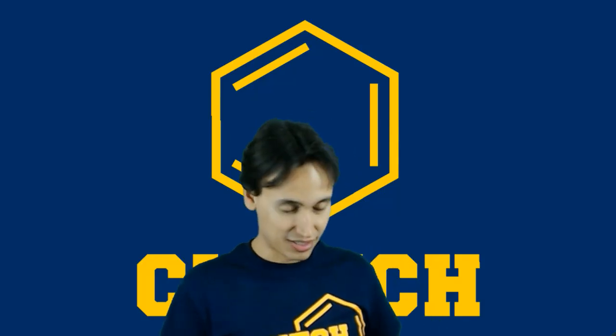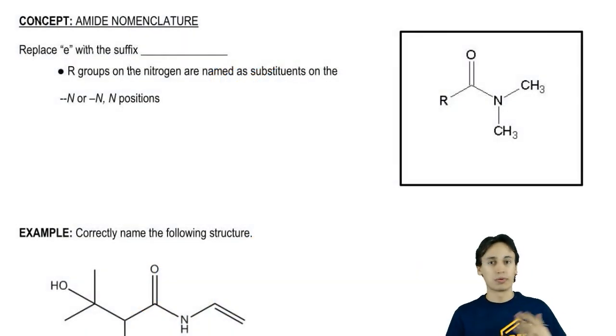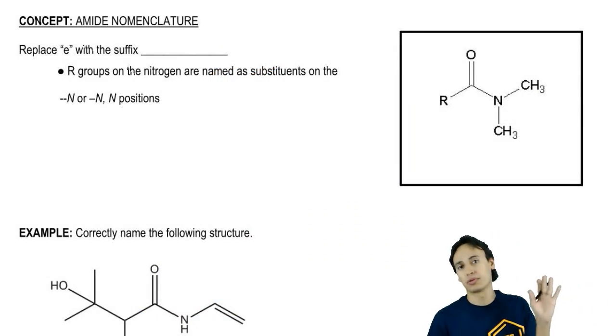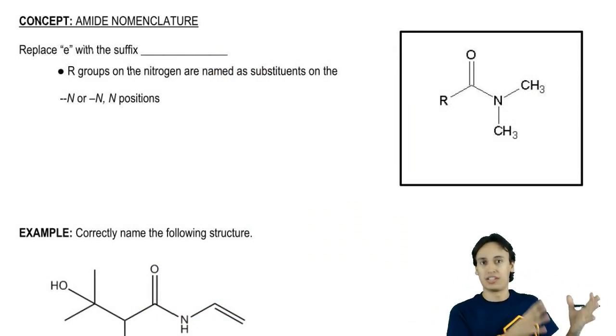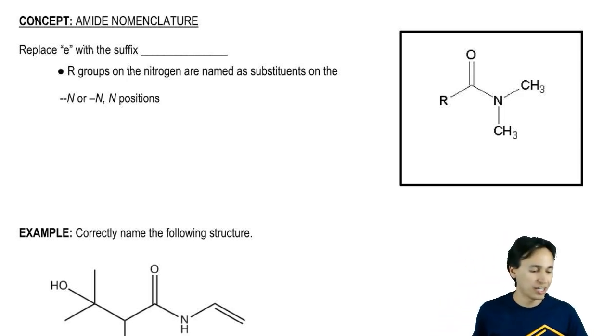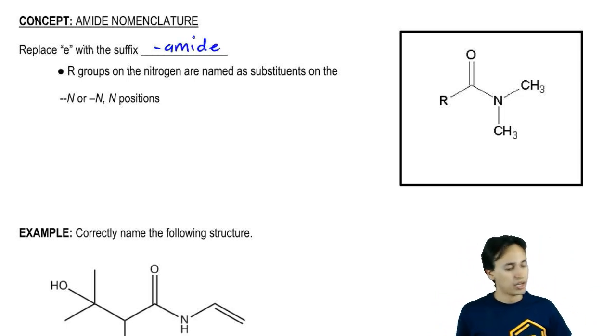Time to learn how to name amides. Amides are a carboxylic acid derivative, so pretty much everything that applies from a carboxylic acid derivative applies to an amide. We're going to replace the E ending of the parent chain with the suffix amide. That's pretty straightforward.